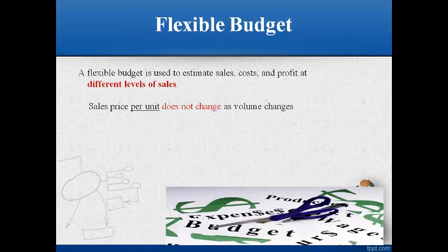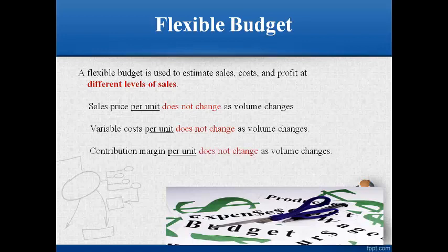A flexible budget is used to project profits at various sales levels. Let's do a quick review of the cost behavior of fixed and variable costs. The per unit sales price and the per unit variable cost will not change as sales volume changes. Therefore, the contribution margin per unit will not change as the volume changes. Total fixed costs do not change as the sales volume changes. Remember to use the cost behaviors that do not change when preparing flexible budgets.